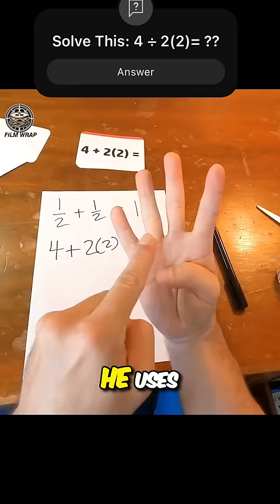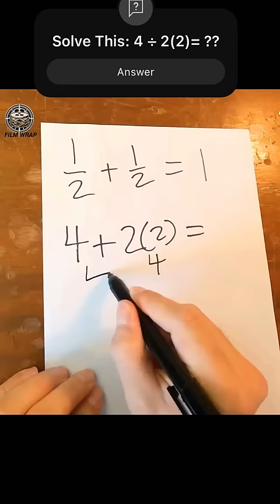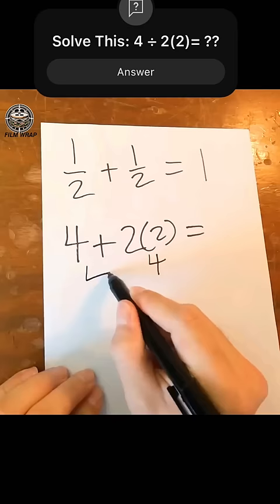For the next question, he uses his fingers to calculate 2 plus 2 equals 4. Then, for 4 plus 4, he uses his fingers to add up the numbers, but strangely, his fingers actually turn into 8.